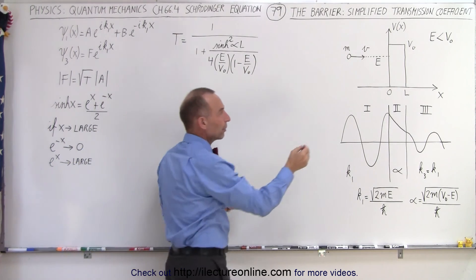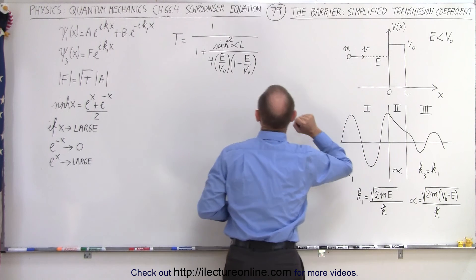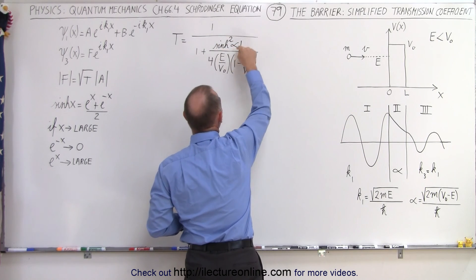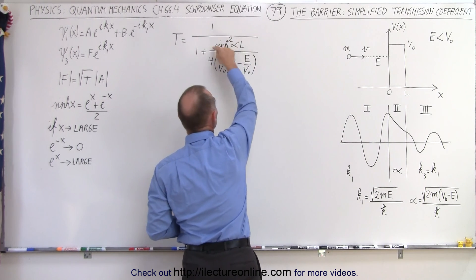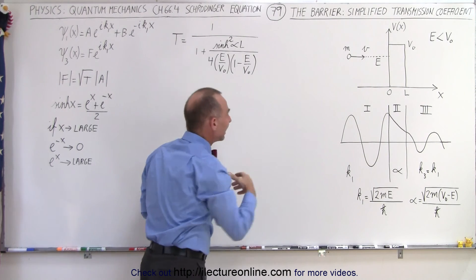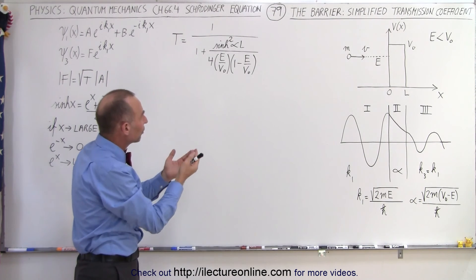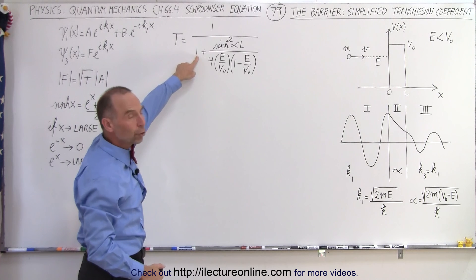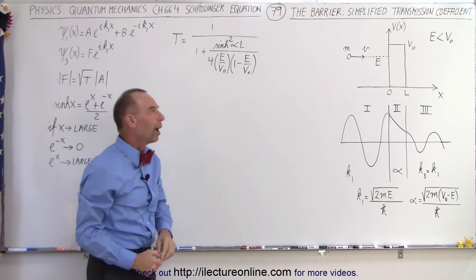In other words, if the barrier is fairly wide, then what we can say is that the hyperbolic sine of alpha times L, and notice that this term is squared, becomes such a large term that a portion of it disappears, and this one here no longer matters. Let me show you why.